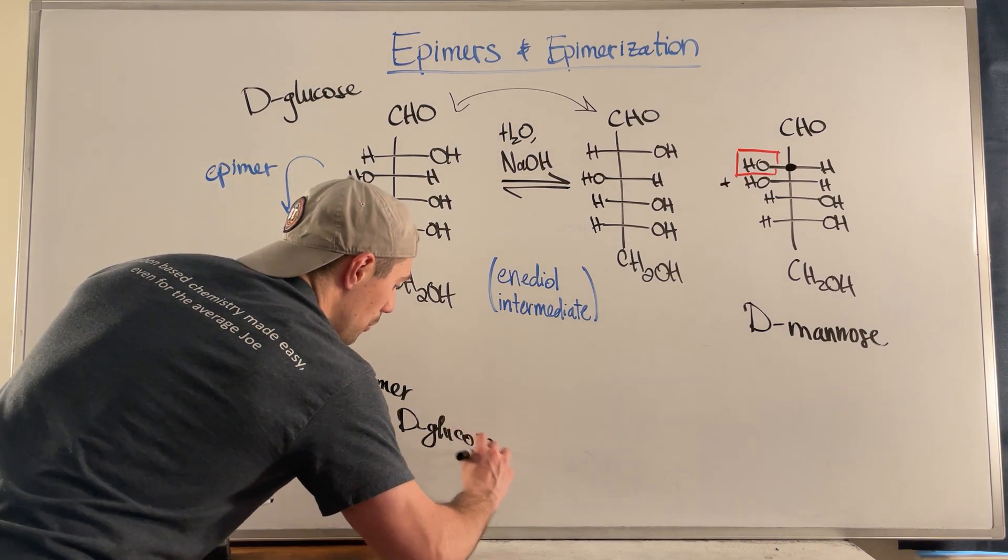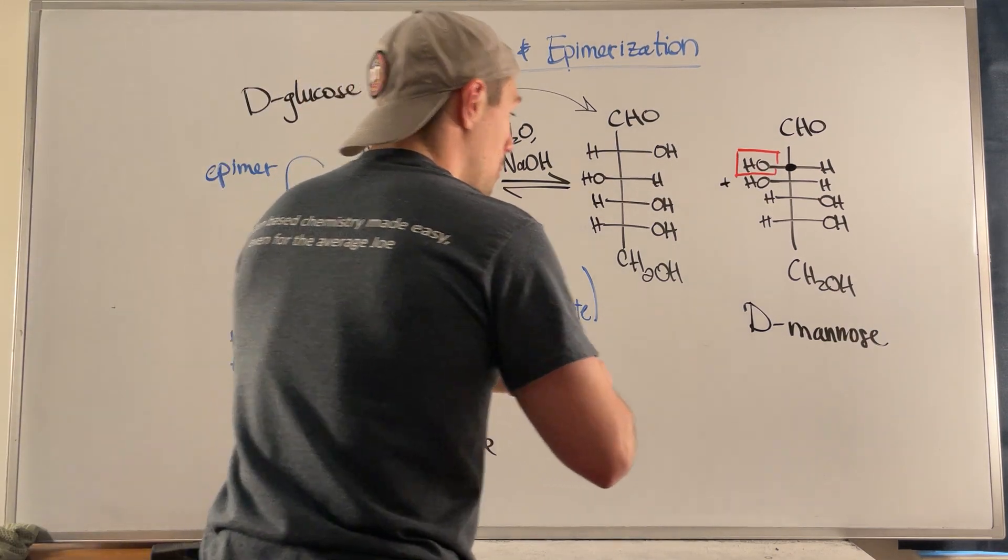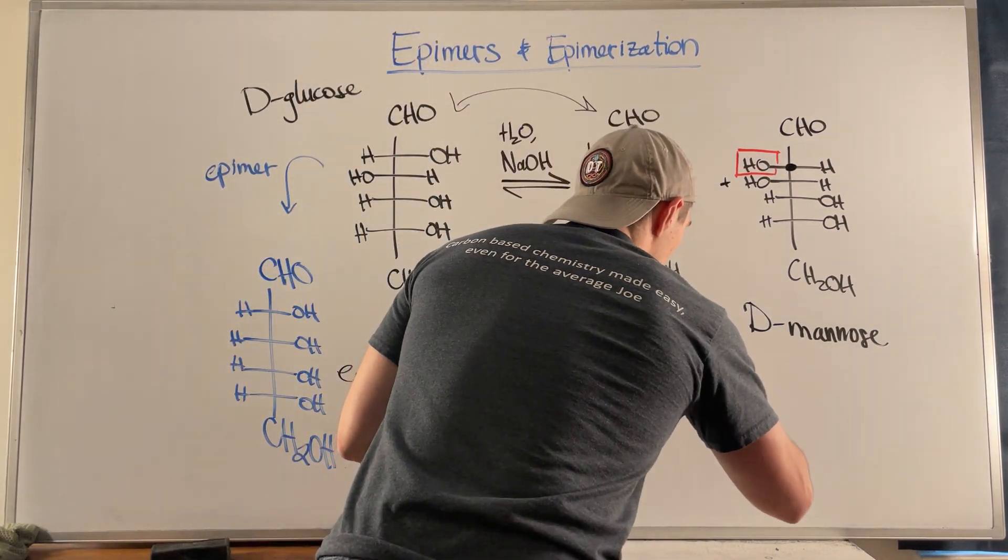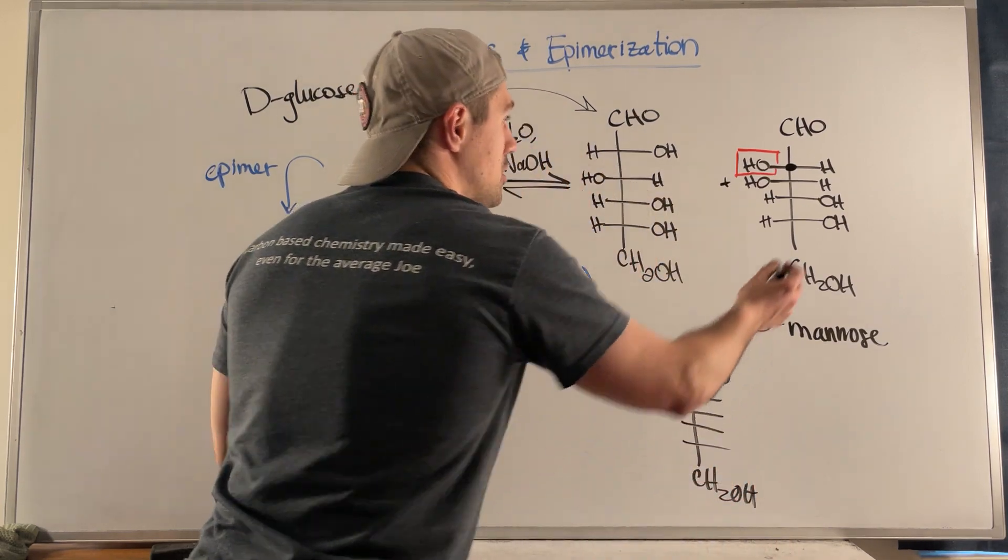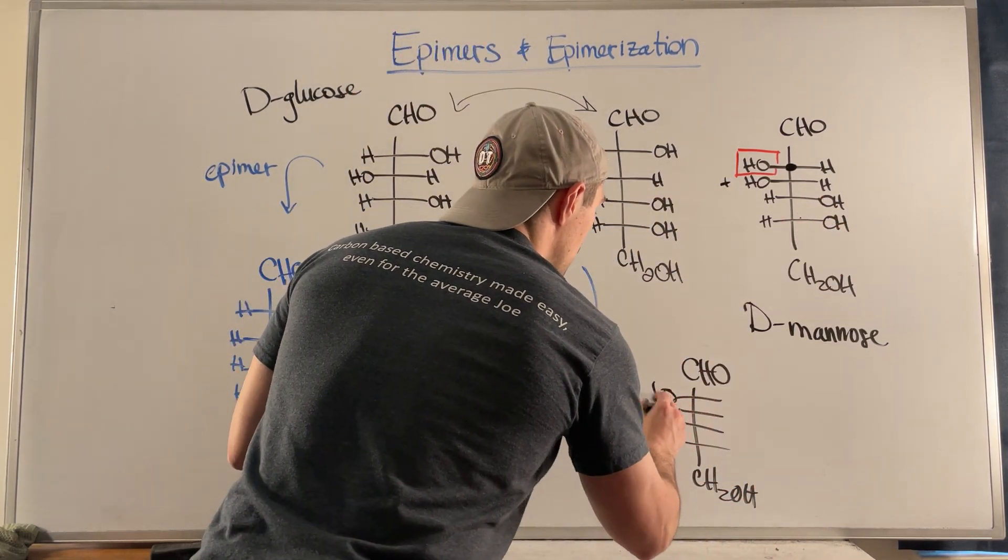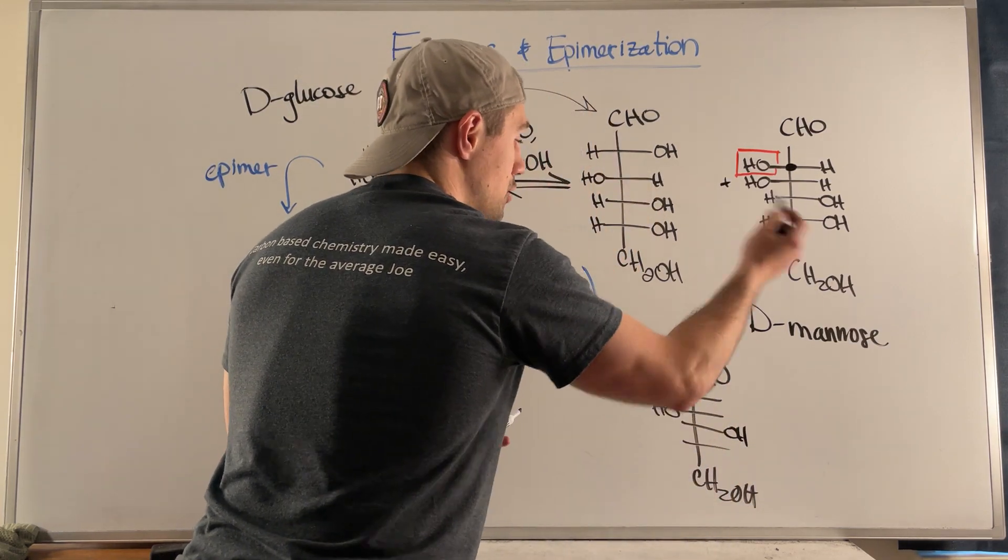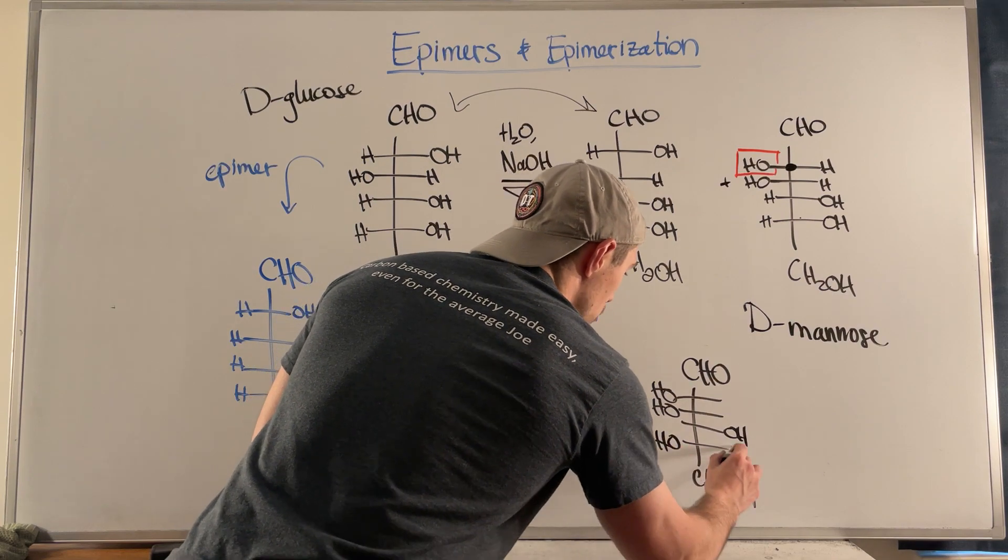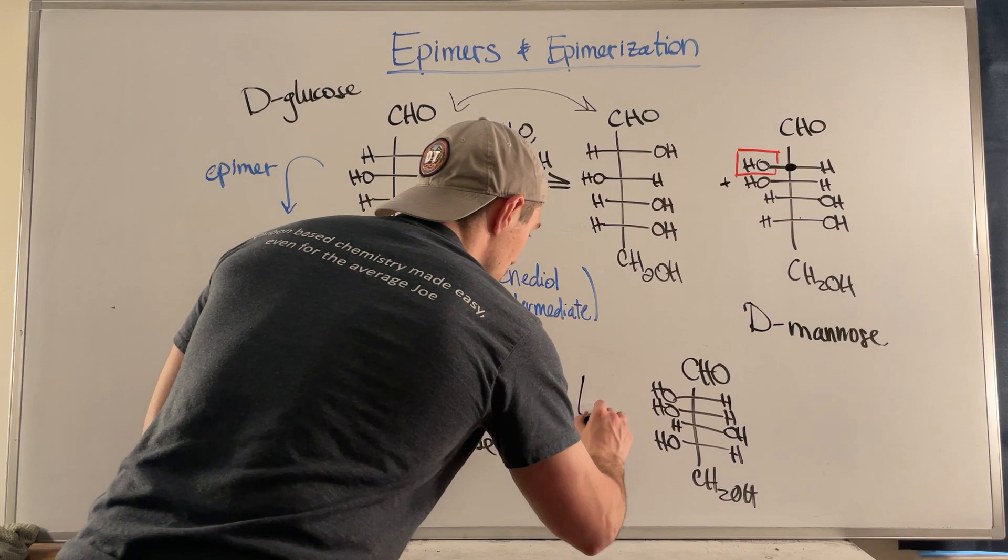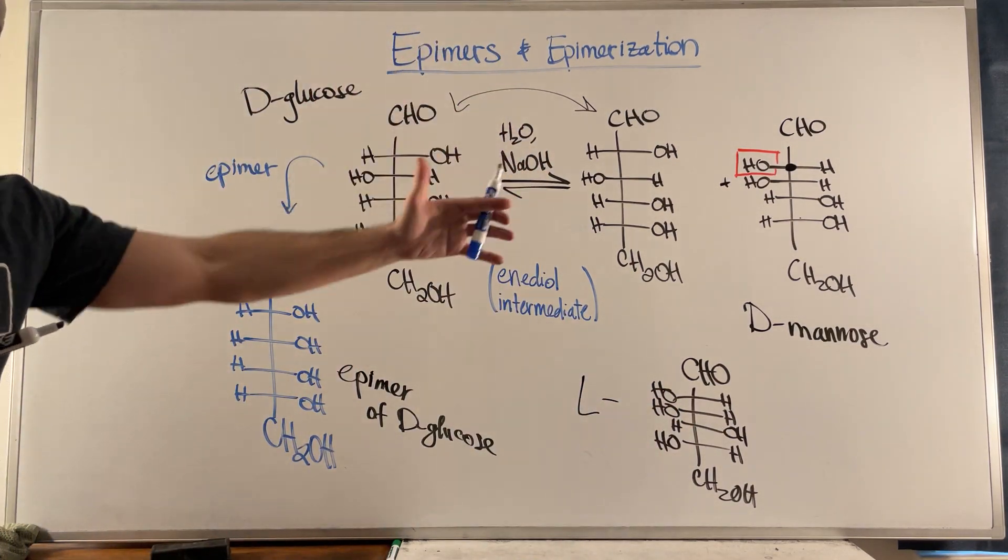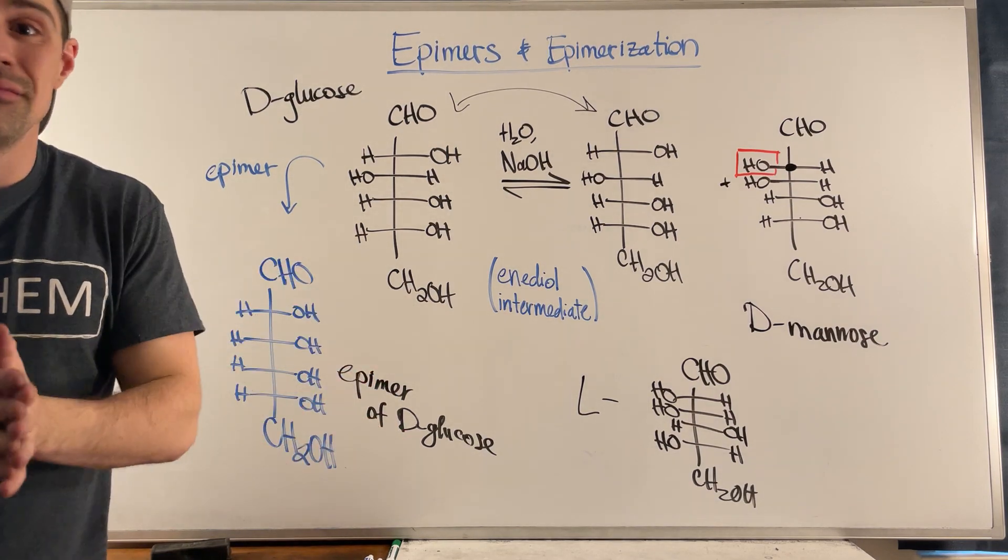And if I, for example, wanted to draw an epimer of D-mannose, of course, there's one right here in D-glucose. But let's just say I wanted to draw another one. So I could have my sugar set up like this. And let's just say I flipped the bottom one. So I have left, left, right. And then I changed the bottom one, which, yes, does give me an L-sugar, but we only differ at one stereocenter. So whatever this L-sugar is, it is an epimer of D-mannose.